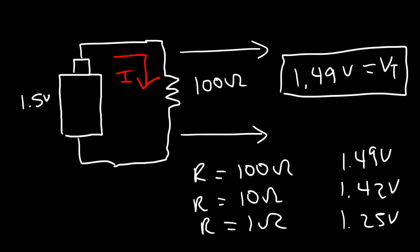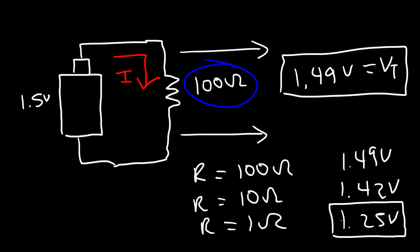Why does this happen? Why does decreasing the load resistance cause the voltage across it to decrease? This has to do with the internal resistance of a battery. Every battery has an internal resistance, and the more current you draw from the battery, the more the terminal voltage decreases. This current increases as you decrease the load resistor. Make sure you understand the difference between the EMF generated by the battery and the terminal voltage of the battery.